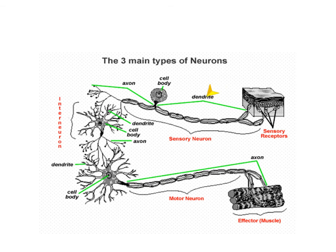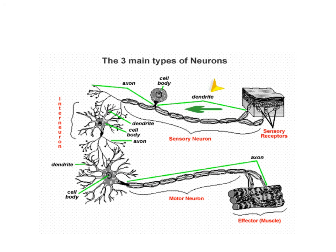Notice that the dendrite on the sensory neuron diagram looks very similar to the axon on the motor neuron, and that the axon on the sensory neuron looks very similar to the dendrite on the motor neuron. Remember that these structures are defined by their functions, not by their appearance. The function of the dendrite is to carry the nerve impulse toward the cell body, and the function of the axon is to carry the nerve impulse away from the cell body.